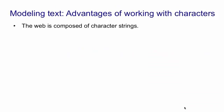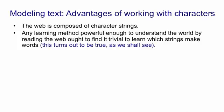I need to start by explaining why we chose to model character strings rather than strings of words, which is what you normally do when you're trying to model language. The web is composed of character strings. Any learning method that's powerful enough to understand what's going on in the world by reading the web ought to find it trivial to learn which strings make words. As we'll see, this turns out to be true.